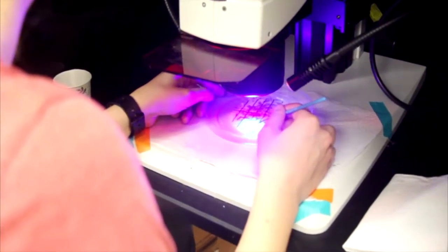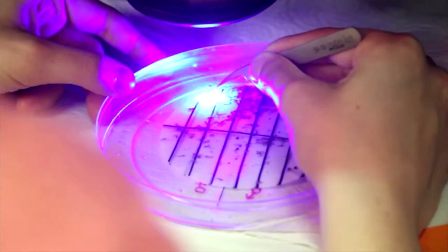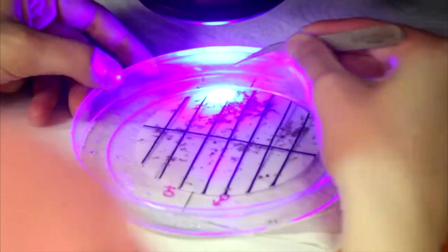Place the filter paper on a petri dish and screen for fluorescence. Remove any negative larva using forceps. Once screening is finished, the larva can be returned to the pan with fresh water and food.